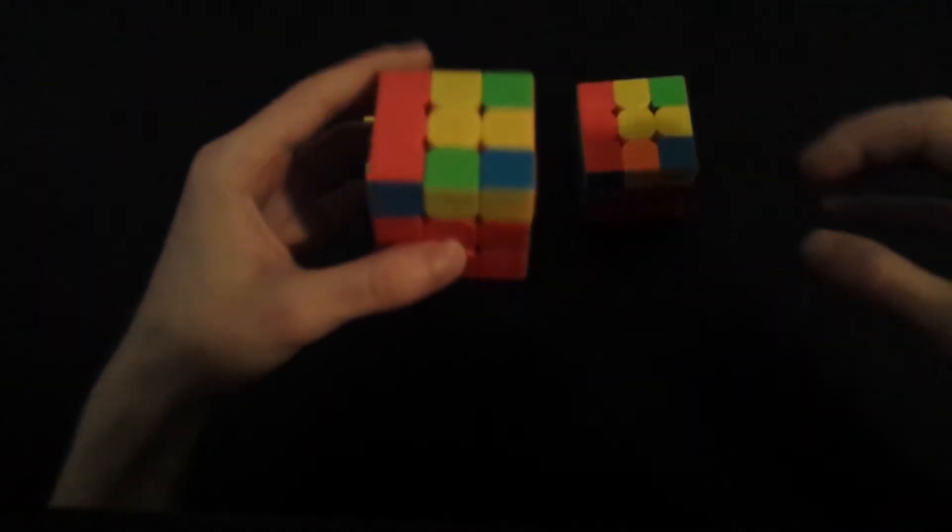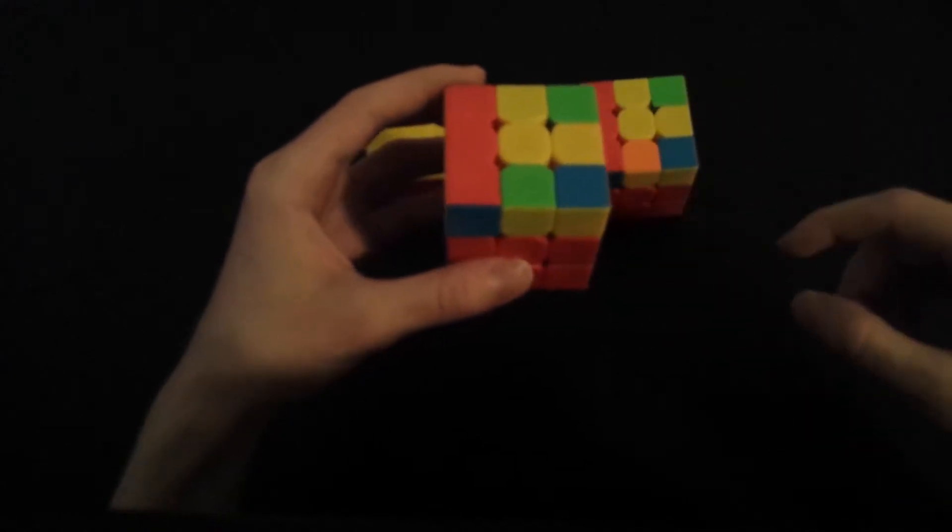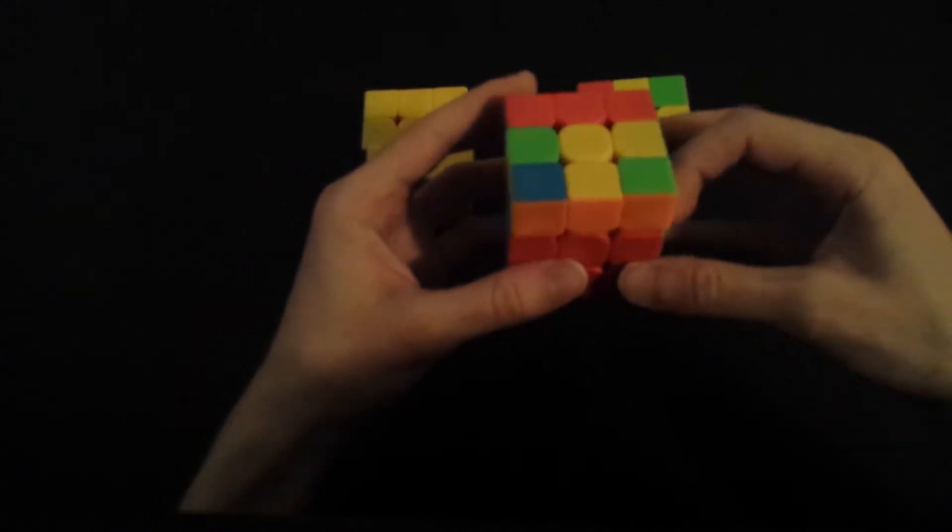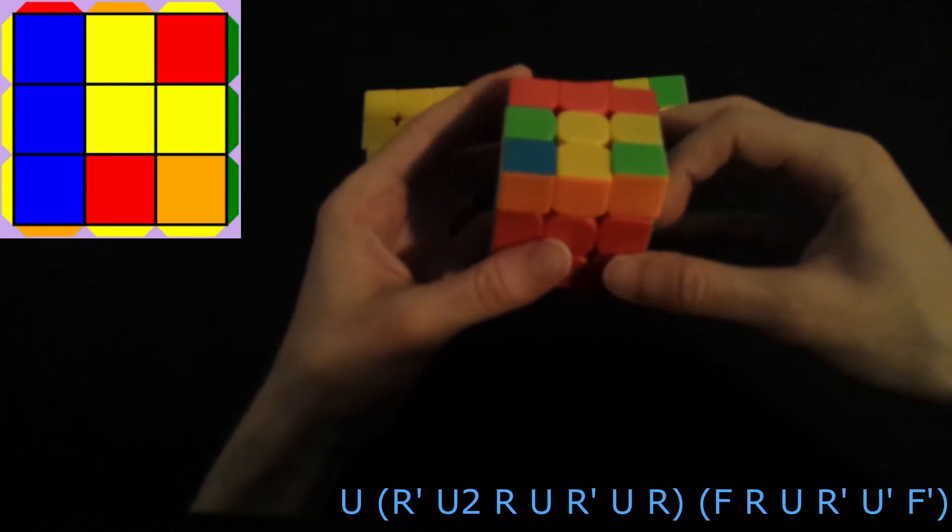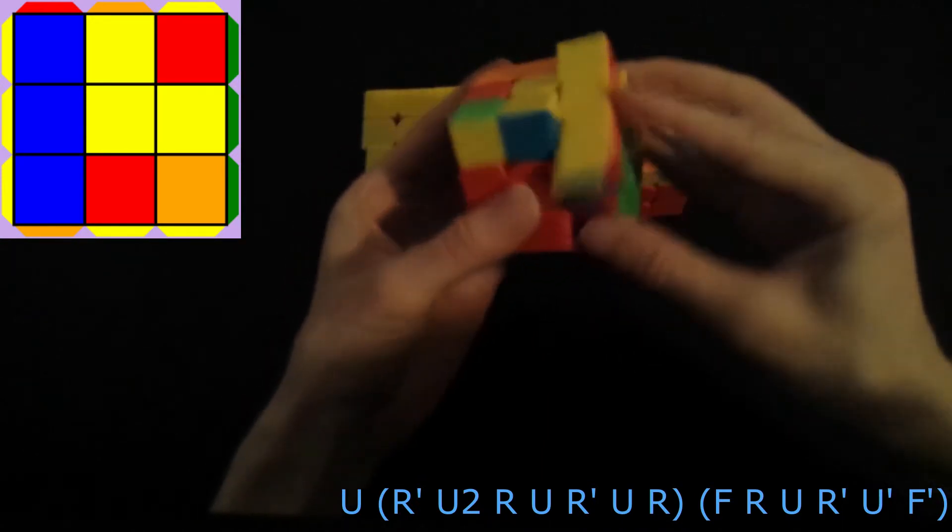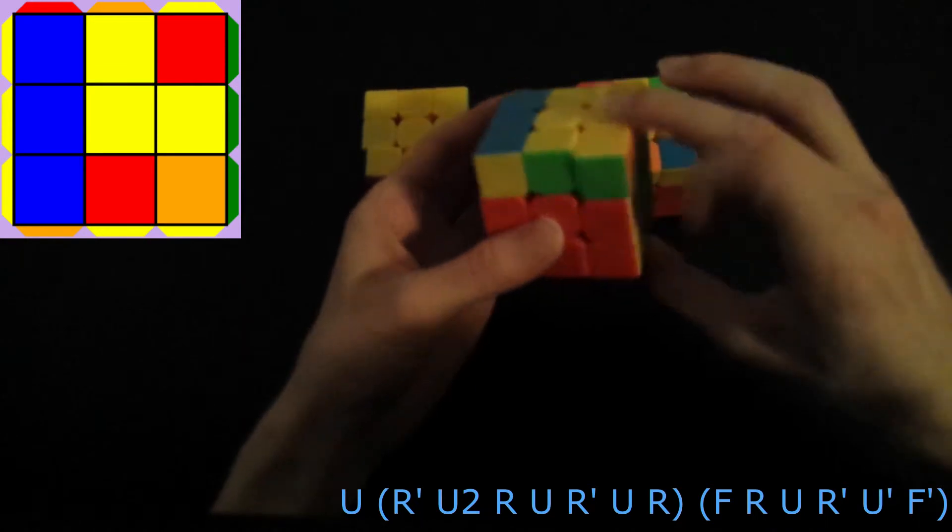For this case, if you have an opposite color right here, this is actually a pretty easy case. You just do U, then a back anti-sune, and then you've got F6CF' which is going to skip for you.